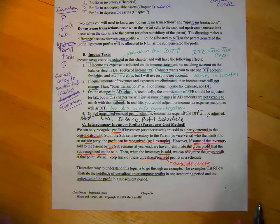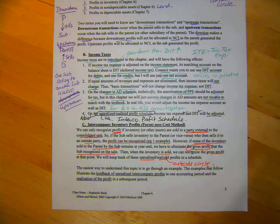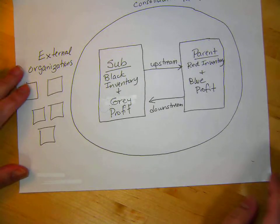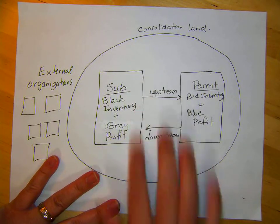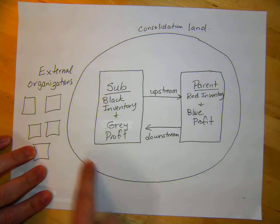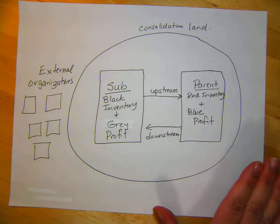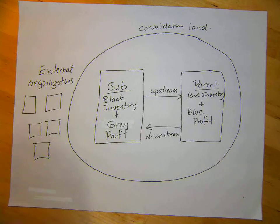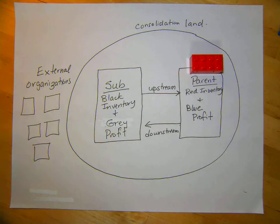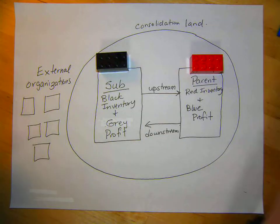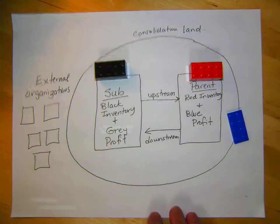Before we go through the numeric example, I'm going to try something. I'm going to use Lego, because usually I'm standing in front of a big whiteboard drawing things and moving things around, so I thought this might work online. Pull out the little sheet — the extra sheet under your Chapter 6 notes — which has the parent and the sub. Notice we've identified downstream and upstream. I've got a circle around these two entities because that's our consolidated entity, and here I have some external organizations. The parent is going to be selling red inventory, the sub is going to be selling black inventory, and I'm going to show their gross profit or markup with a blue piece of Lego and a gray one.